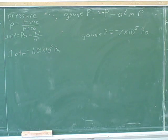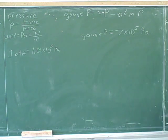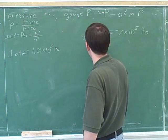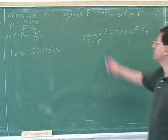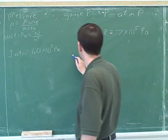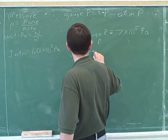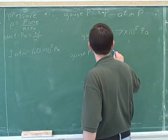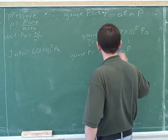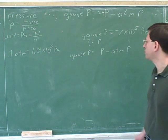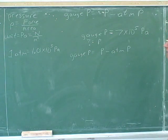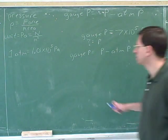For example, let's say the gauge pressure is 7 times 10 to the 5th Pascals. Let's see if we can figure out what the actual absolute pressure is. We want to use the formula. We can plug in 7 times 10 to the 5th Pascals for the gauge pressure.